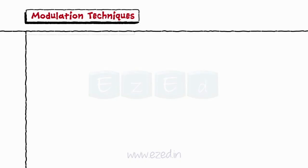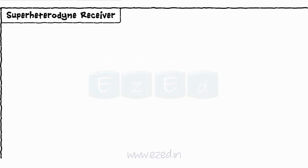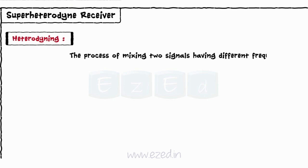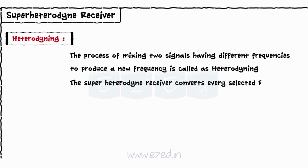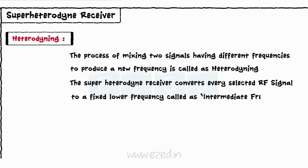Next, we will study about a very important concept: the super-heterodyne receiver. The process of mixing two signals having different frequencies to produce a new frequency is called heterodyning. The super-heterodyne receiver converts every selected RF signal into a fixed lower frequency called the intermediate frequency.